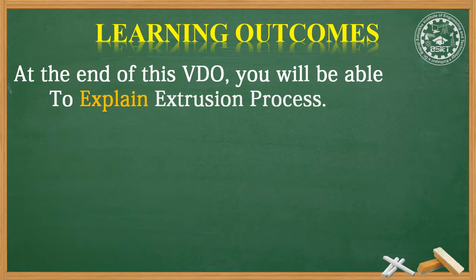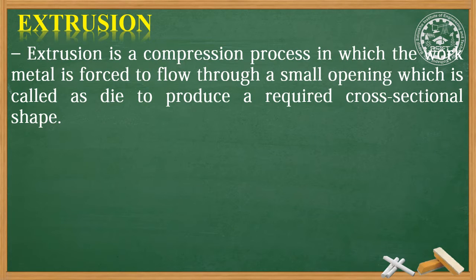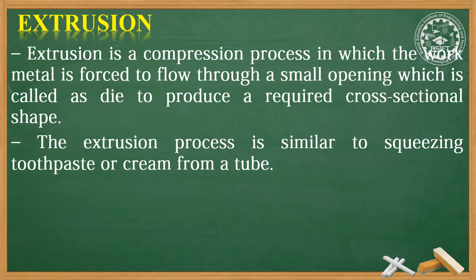At the end of this video you will be able to explain the extrusion process. Extrusion is basically a compression process in which the work metal is forced to flow through a small opening called a die to produce a required cross-sectional shape. The extrusion process is similar to squeezing toothpaste or cream from a tube.